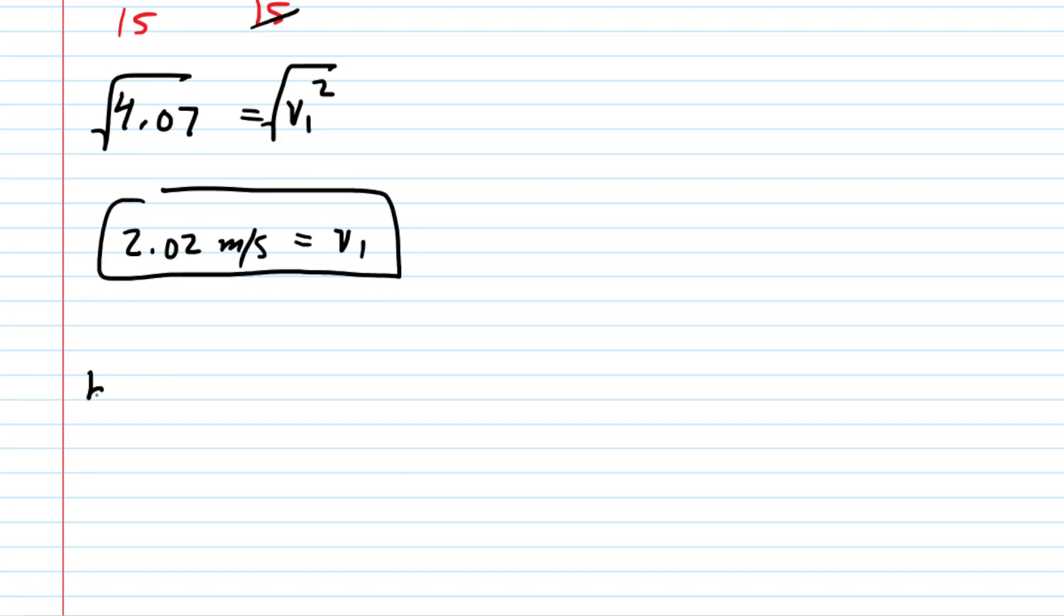In part B, we just need to find the speed of the water at the other end of the pipe. And we know that that is simply 4 times v sub 1. So we'll plug in the value we got from part A. And when we simplify this, we see that v sub 2 is about 8.07 meters per second, or 8.08 would work as well. That is the correct answer to part B.